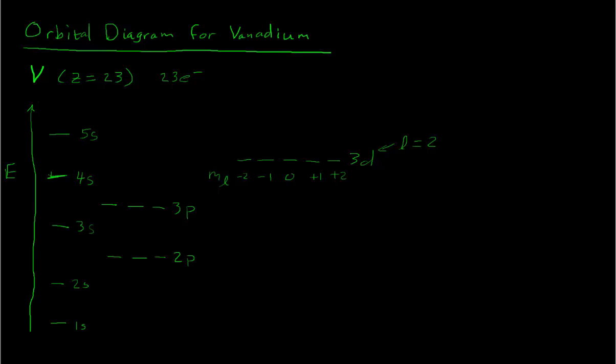So again, the Aufbau principle, we start filling low energy. So we put one electron spin up in that low energy shell, and then we do another electron spin down, and that energy shell is full. So according to the Aufbau principle, we move up. We had to put this other electron spin down to follow the Pauli principle.